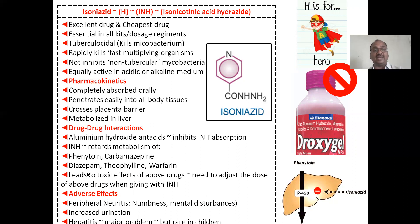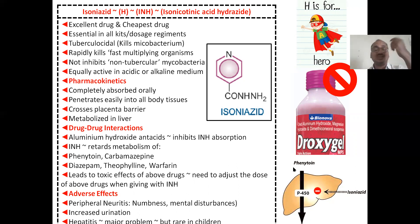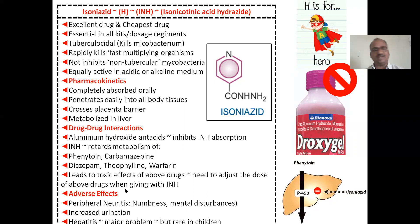INH retards the metabolism of various drugs including phenytoin, carbamazepine, disulfiram, theophylline, and warfarin. For example, phenytoin is metabolized in the liver, but isoniazid stops that metabolism, so phenytoin concentration keeps increasing, leading to phenytoin toxicity. Therefore, when giving phenytoin along with isoniazid, reduce the dose of phenytoin.